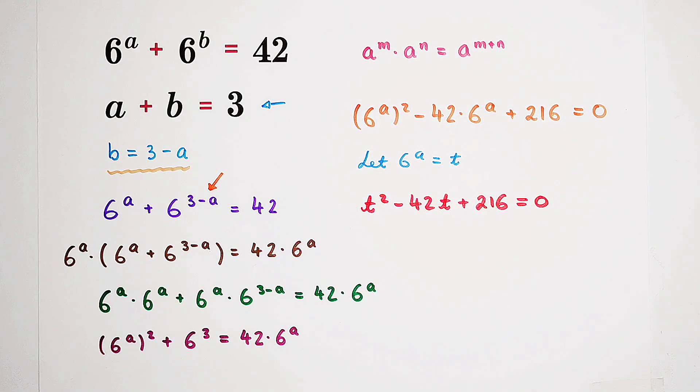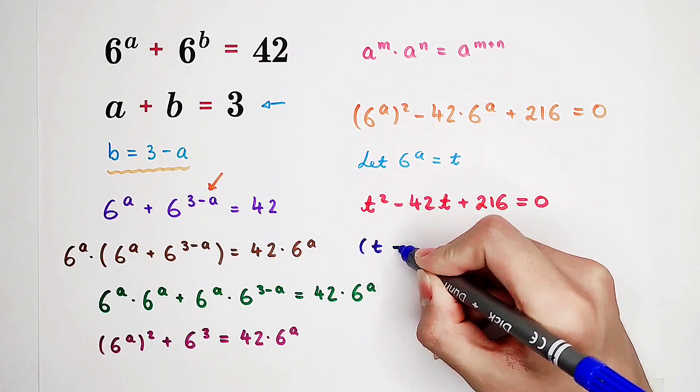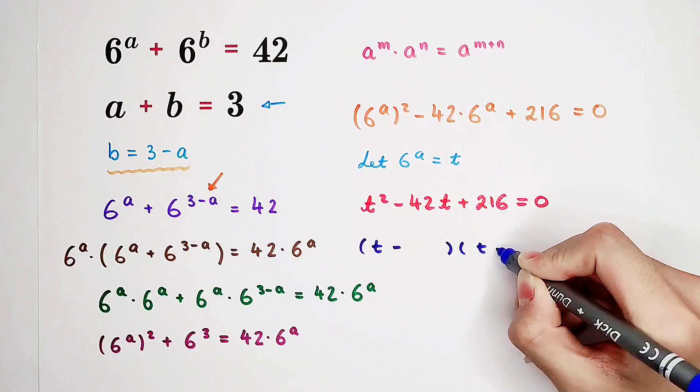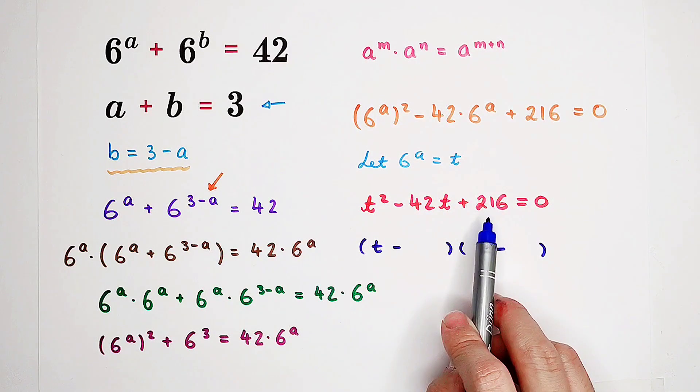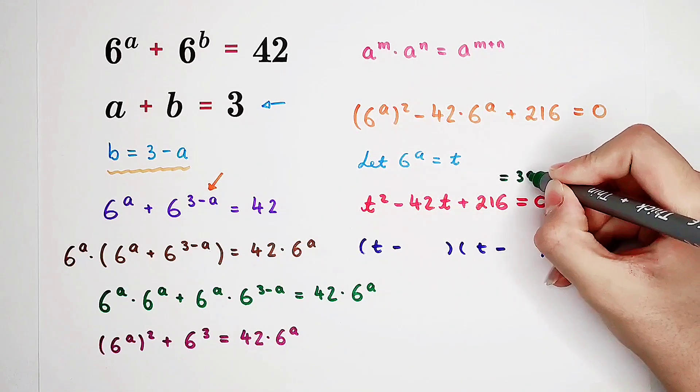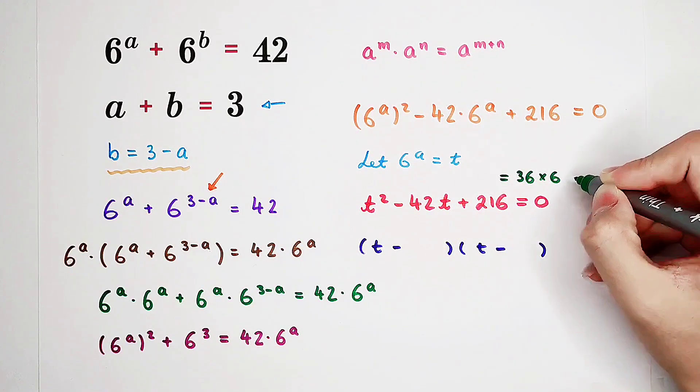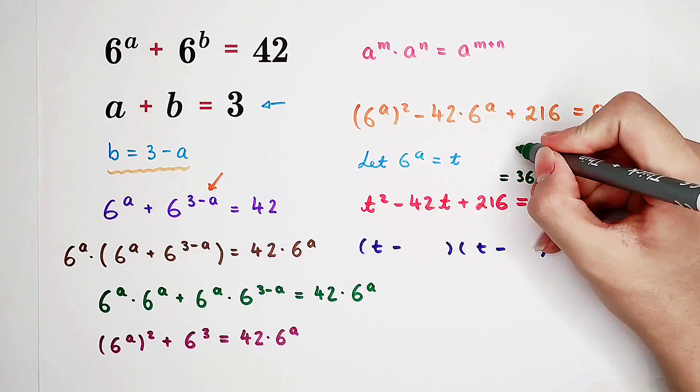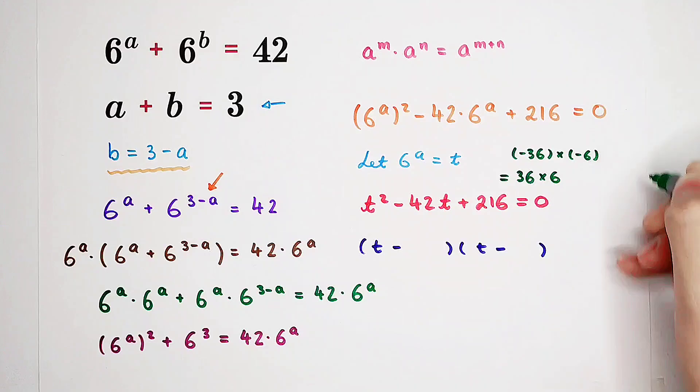How? Factorization. 216 is 36 times 6. But here we have negative 42. So, we have to write it as negative 36 times negative 6.